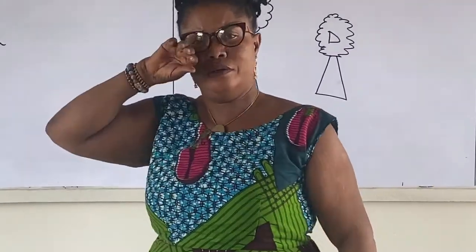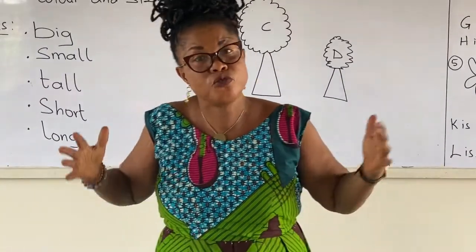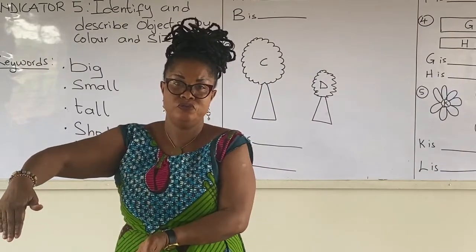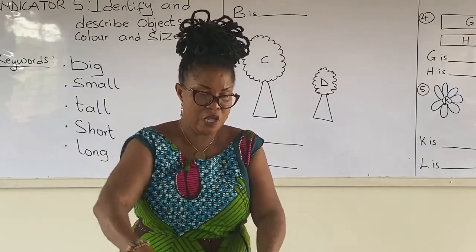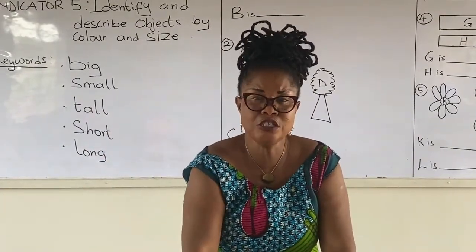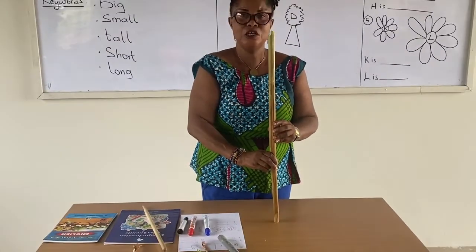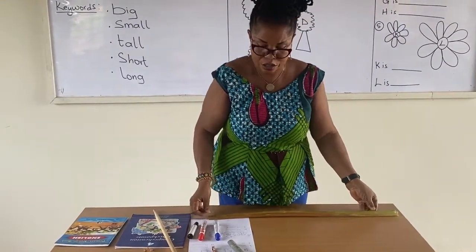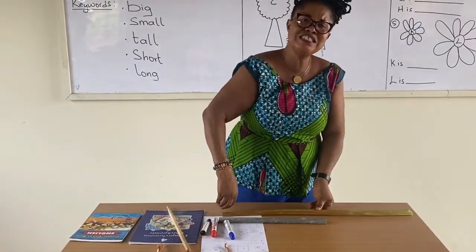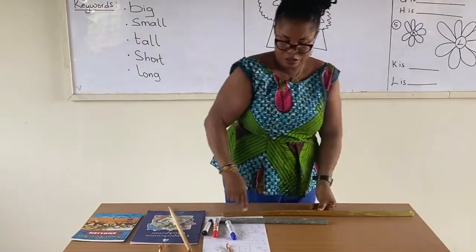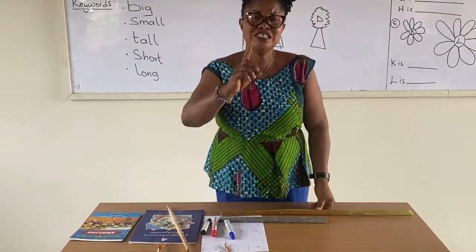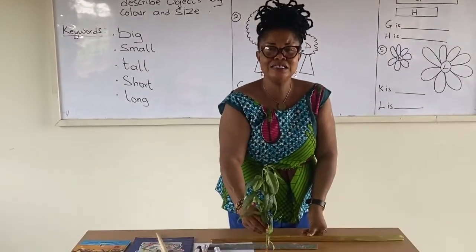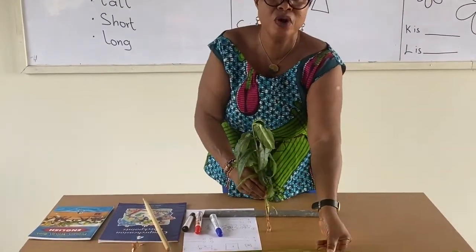Now let's look at long. Some people use long instead of tall — let's look at the difference. When something is lying down, we use long. This stick is standing upright, so we use tall. But as soon as it is lying down, we use long. So when comparing two sticks that are lying down, this stick is long and this stick is short.